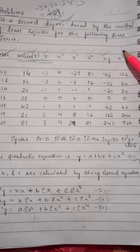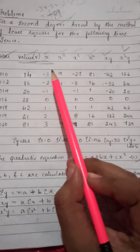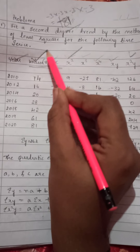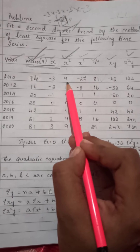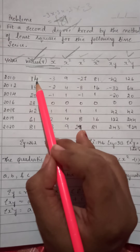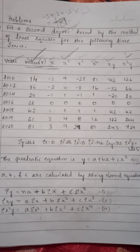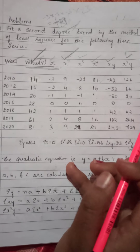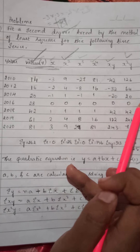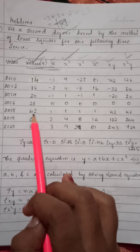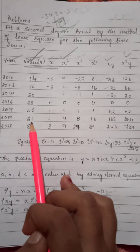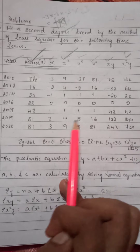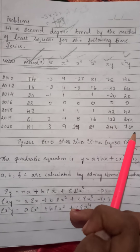The next column is x²y — x² multiplied by y. For x² = 9, y = 14: 9 × 14 = 126. Then 4 × 16 = 64. Then 1 × 20 = 20. Then 0 × 28 = 0. Then 1 × 42 = 42. Then 4 × 61 = 244. Then 9 × 81 = 729.